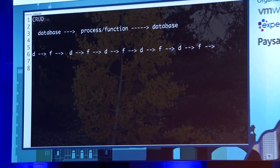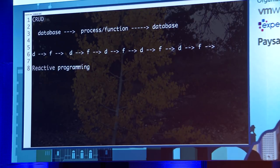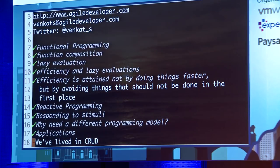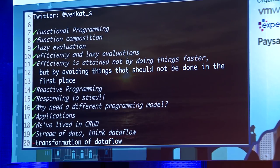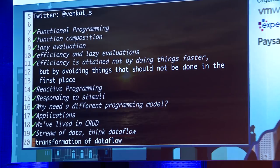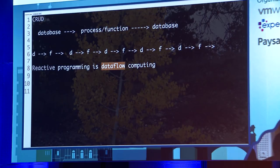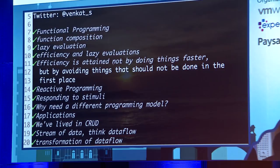So we can do data flow computing, whatever name we call it. What is reactive programming? I'm going to say two things. First of all, reactive programming is data flow computing — that is the foremost thing I want to emphasize. Rather than thinking about a database, we are living the time of data streaming. We take a stream of data, think of data flowing through it, and transform it from one transformation to another. These series of transformations — that is what reactive programming is.